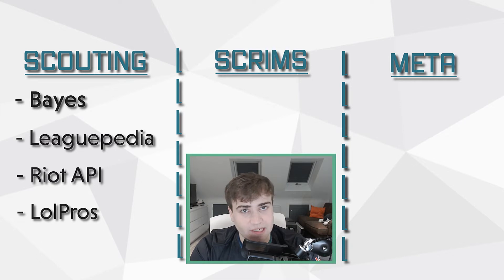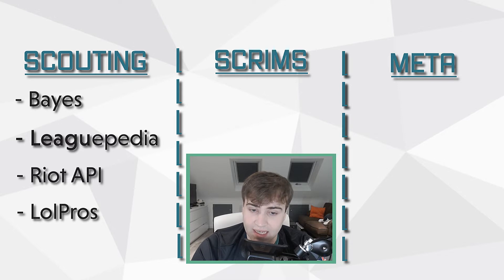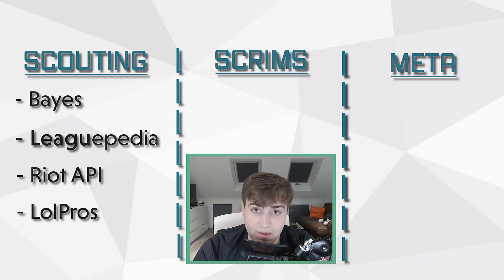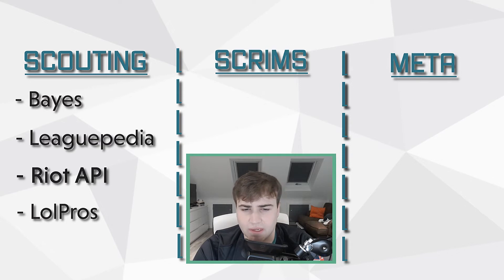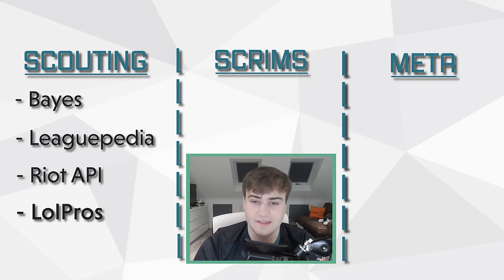For Bayes, obviously second-by-second data on games the enemy team has played is going to be crucial in finding things like jungling habits, warding patterns, and other things to do with what happens on the rift itself. Leaguepedia is useful for automatically grabbing drafts, finding out pick orders, finding blinds they usually pick, and champions they play. The Riot API can be useful for solo queue data, and LoLPros of course helps you find the smurfs of each player, so your solo queue scouting has the breadth you require.